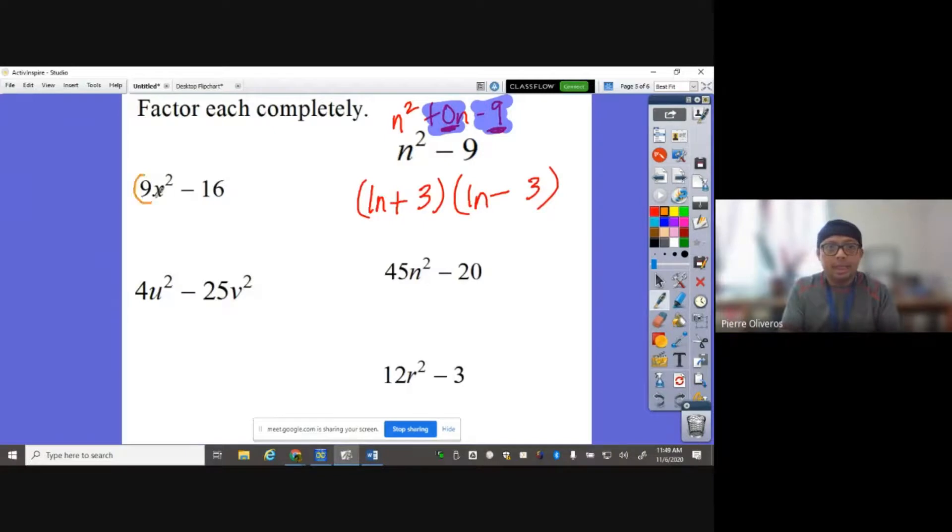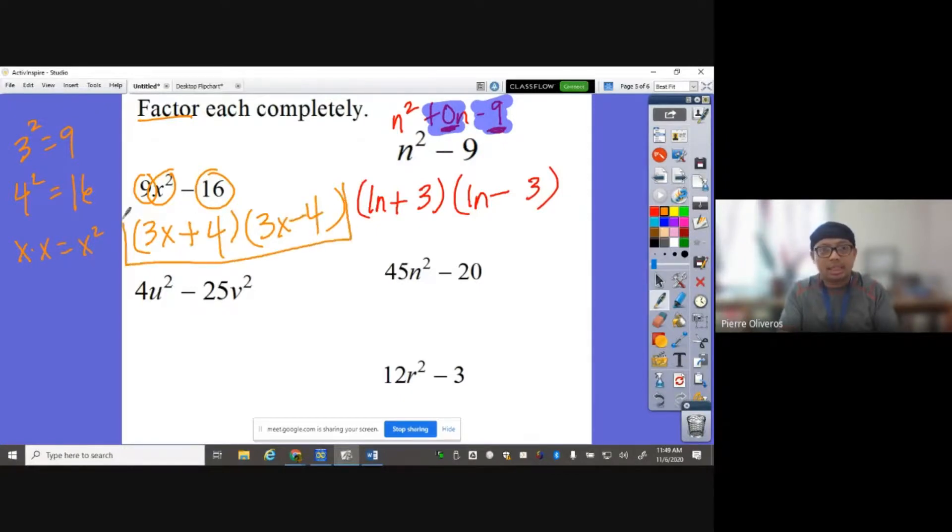Another one here. 9x squared minus 16. 9 and 16 are both perfect square numbers. Remember, 3 squared is 9. 16 is 4 squared. So that means when I'm asked to factor them, I'm going to put 3 and 3 here. Since this is x squared, again, we know that x times x is x squared. So I'm going to put x here and x here. Now, for the 16, we know it's 4 squared. When you multiply two 4s, 4 and 4, 1 is positive, 1 is negative, and that's the answer. Kaboom.